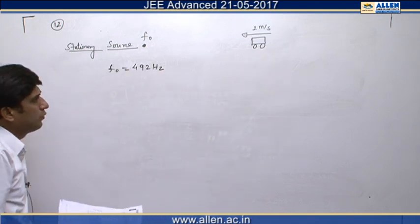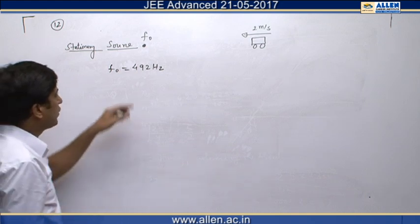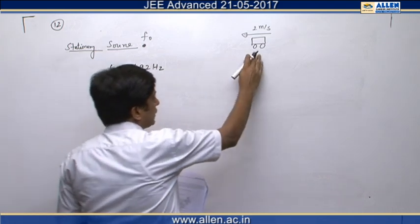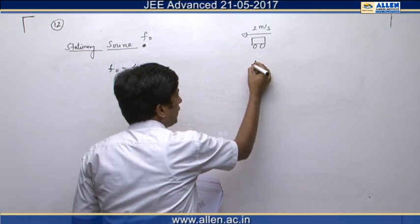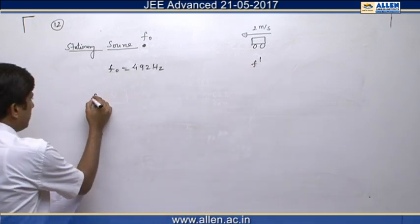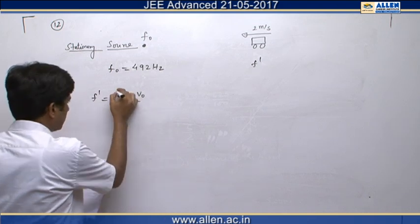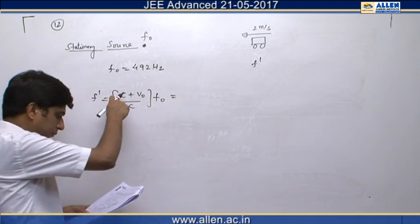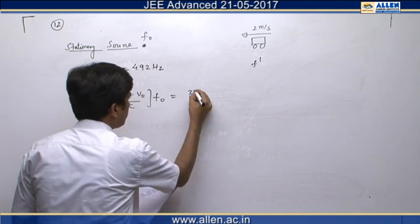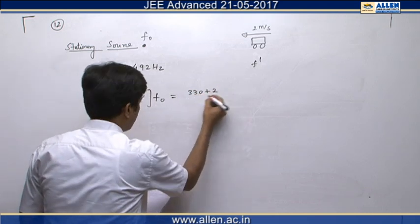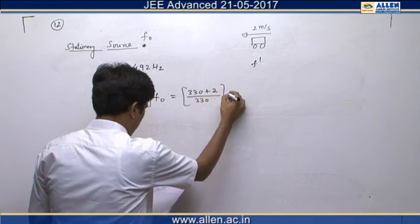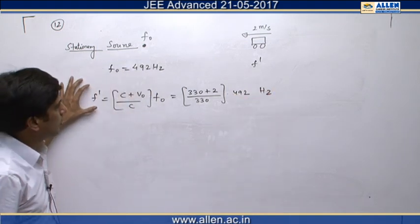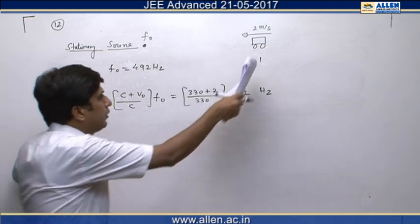To calculate the beat frequency, we have to find the frequency of the reflected wave received by the source. Let us assume the frequency received by the car is f'. The value of f' will be given by (c + v₀)/c times f₀ using the Doppler effect formula. The value of c, the speed of sound, is 330, so f' equals (330 + 2)/330 times 492. This is the frequency detected by a detector on the car.